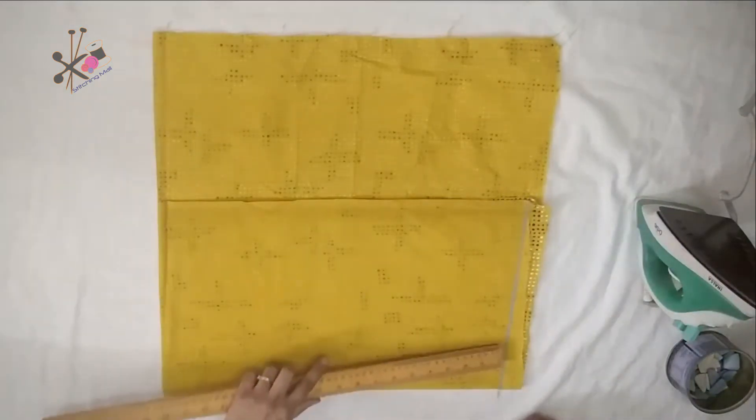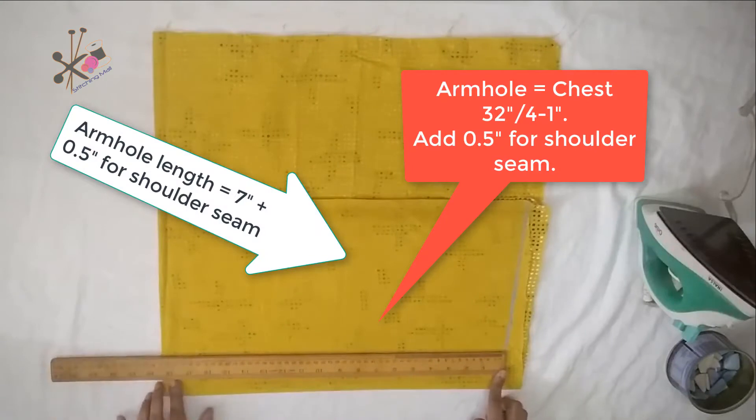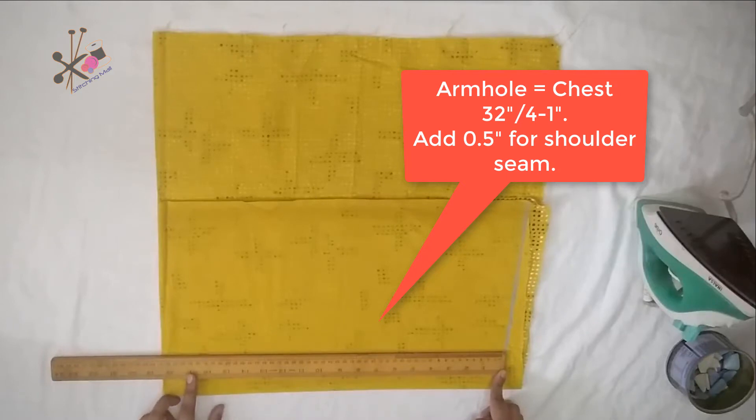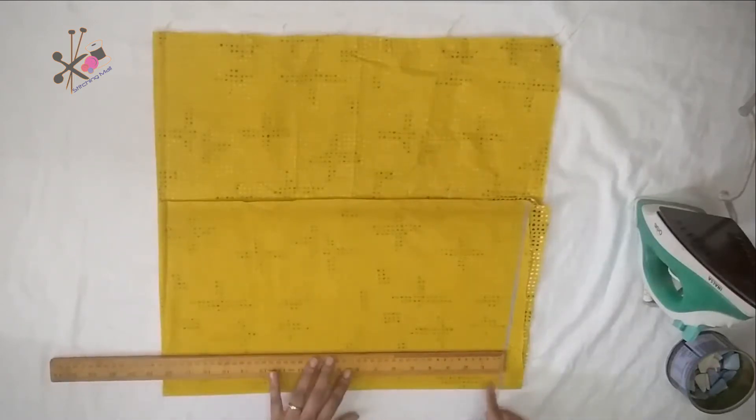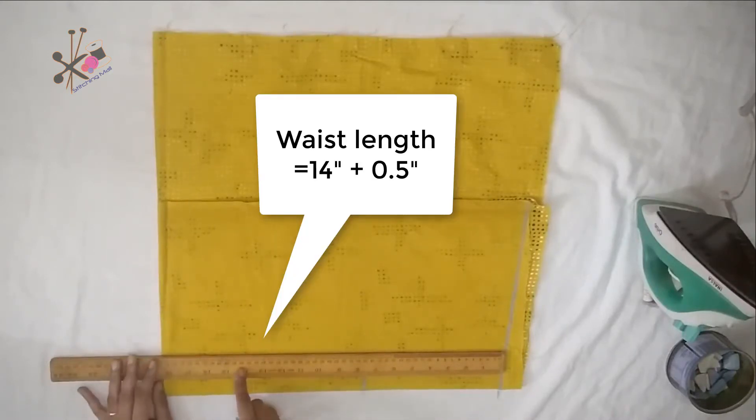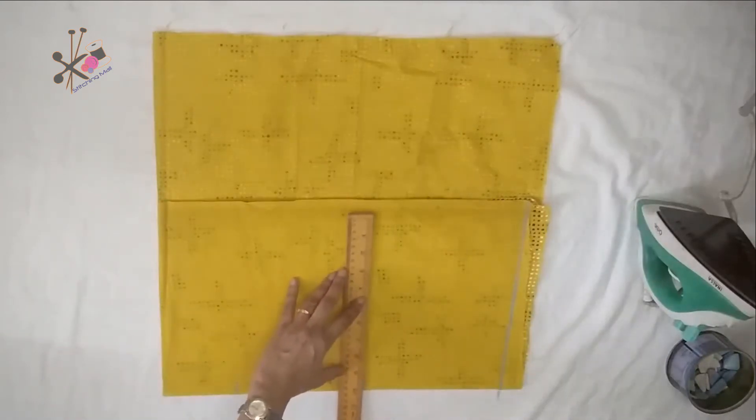And then add seam allowance, that is half inch for the shoulders. Mark waist length and total length, and extend these markings.